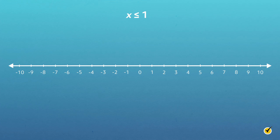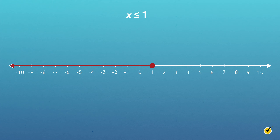Here's another inequality: x is less than or equal to 1. Let's graph this on a number line. First, find 1 on the number line and draw a shaded circle above it. The circle is closed to indicate that 1 is part of the solution set for this inequality. Next, starting from 1, draw a line to indicate all other possible solutions for x. Since x is less than or equal to 1, we need to draw the line to the left of 1.